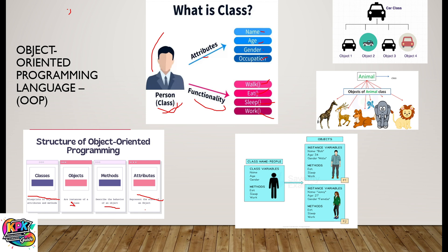Let's look at another example. A car as a class is a blueprint. Objects are what we call instances of the class. So we can have a Camry — all of them become what we call objects. Objects here are instances of the class. So the main class is called car, and under car we have what we call objects, which are the instances of that particular class.